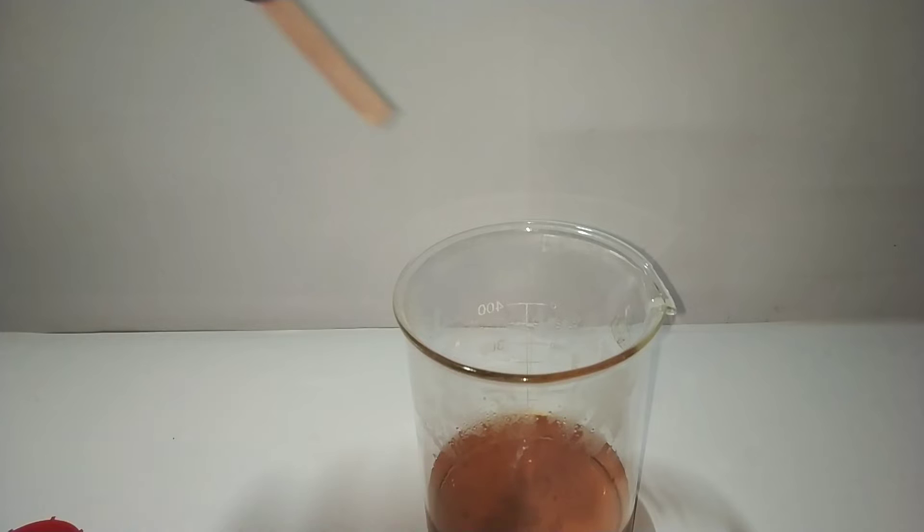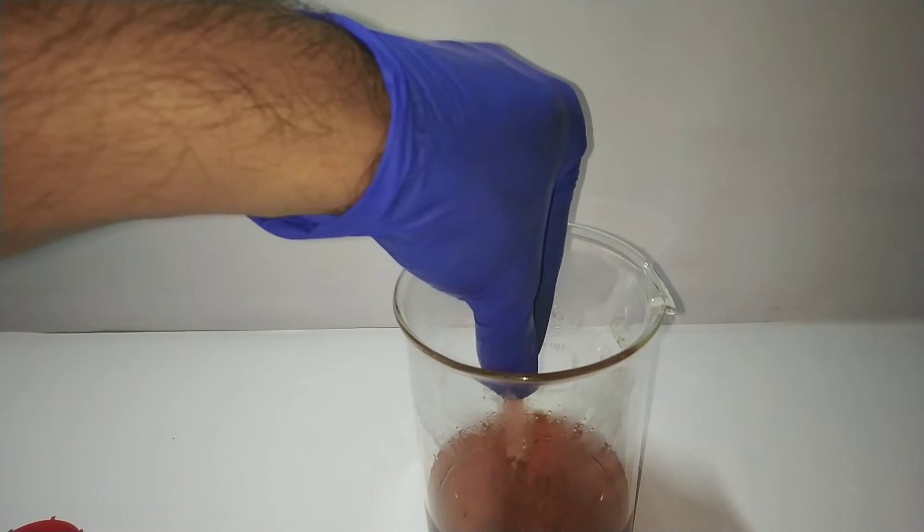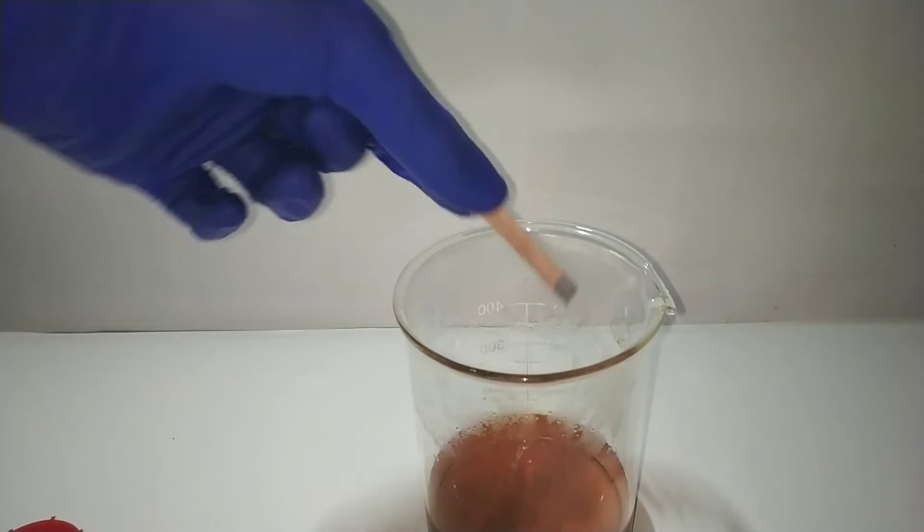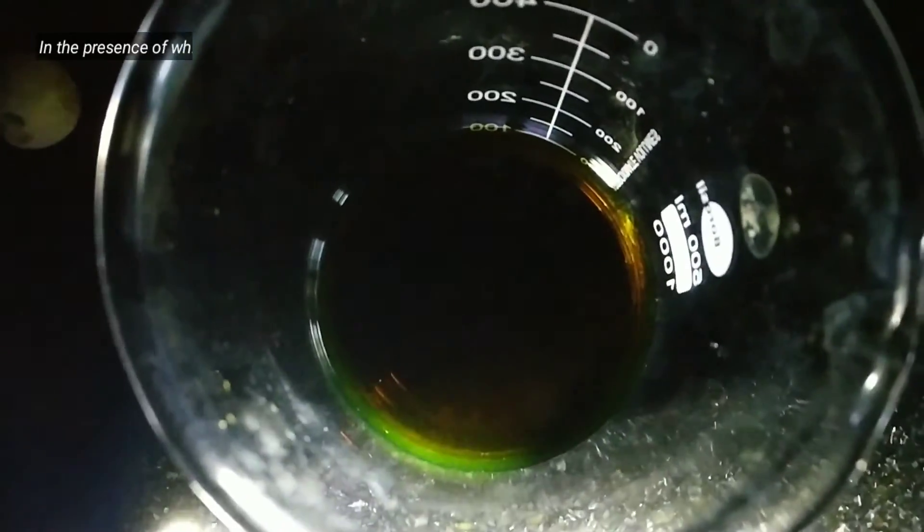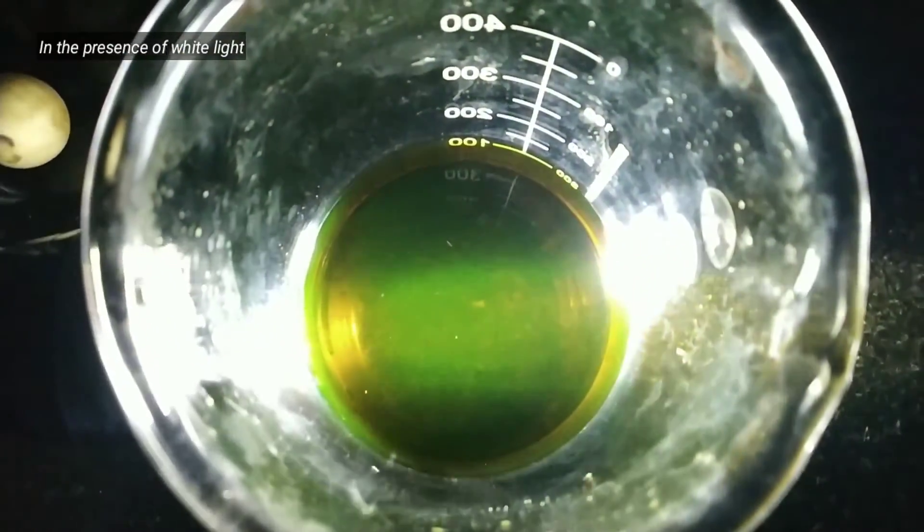We can test whether our resultant solution is alkaline or not by using a red litmus paper, and in this case it is alkaline as it turned blue. Now this solution has a high concentration of fluorescein in it.